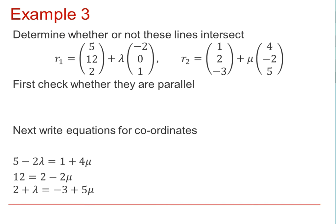In this example, you are asked to determine whether or not these lines intersect. You will remember that the possibilities were either that they are parallel or skew or that they intersect. Let's first check whether they are parallel. To be parallel, the direction vectors will be multiples of each other. Looking at minus 2, 0, 1 and 4, minus 2, 5, it is easy to see by inspection that they are not parallel lines because those direction vectors are not multiples of each other.